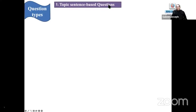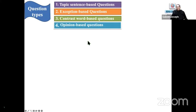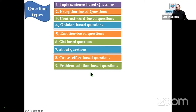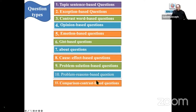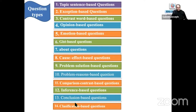Number one: topic sentence based questions. Number two: exception based questions. Number three: contrast word based questions. Number four: opinion based questions. Number five: emotion based questions. Number six: gist based questions. Number seven: about questions. Number eight: cause and effect based questions. Number nine: problem solution based questions. Number ten: detail based questions. Number eleven: comparison contrast based questions. Number twelve: inference based questions. Number thirteen: conclusion based questions.